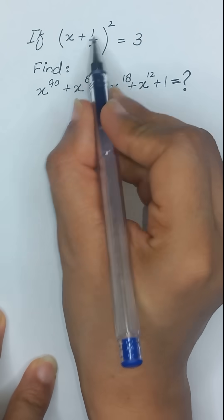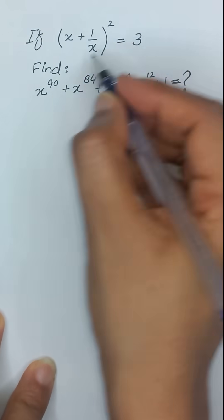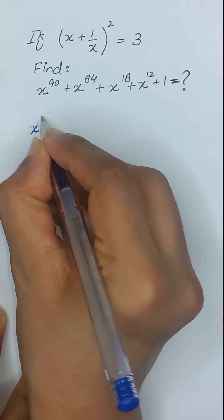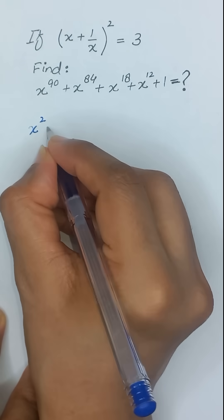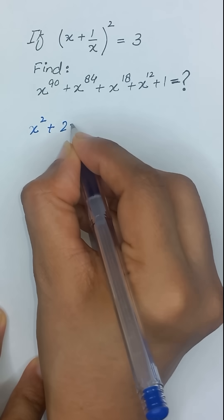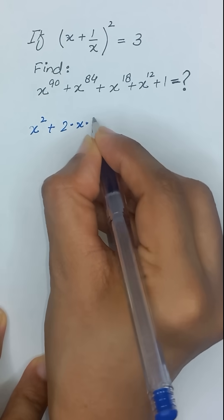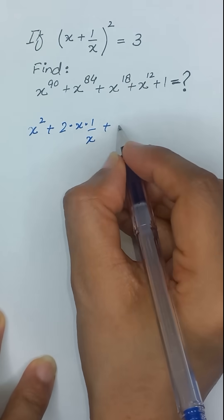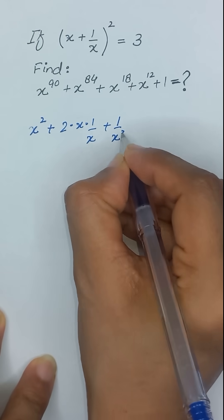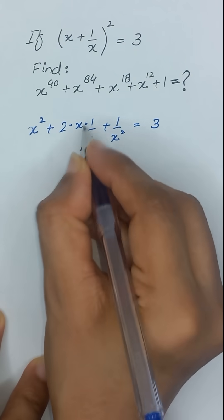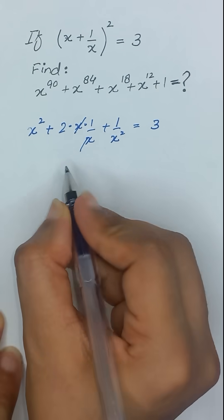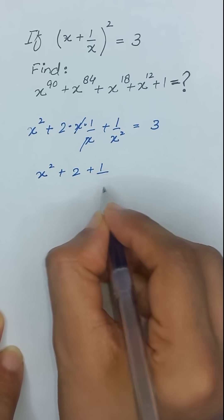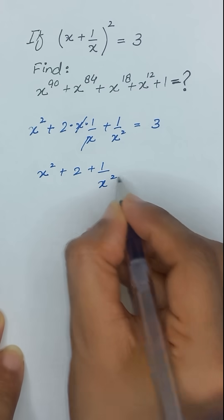It is given that x plus 1 divided by x, whole square. It is in the form of (a + b)² which equals a² plus 2ab plus b², meaning x² plus 2 times x times 1/x plus 1/x². This x and x will be cancelled out, so it becomes x² plus 2 plus 1/x² is equal to 3.